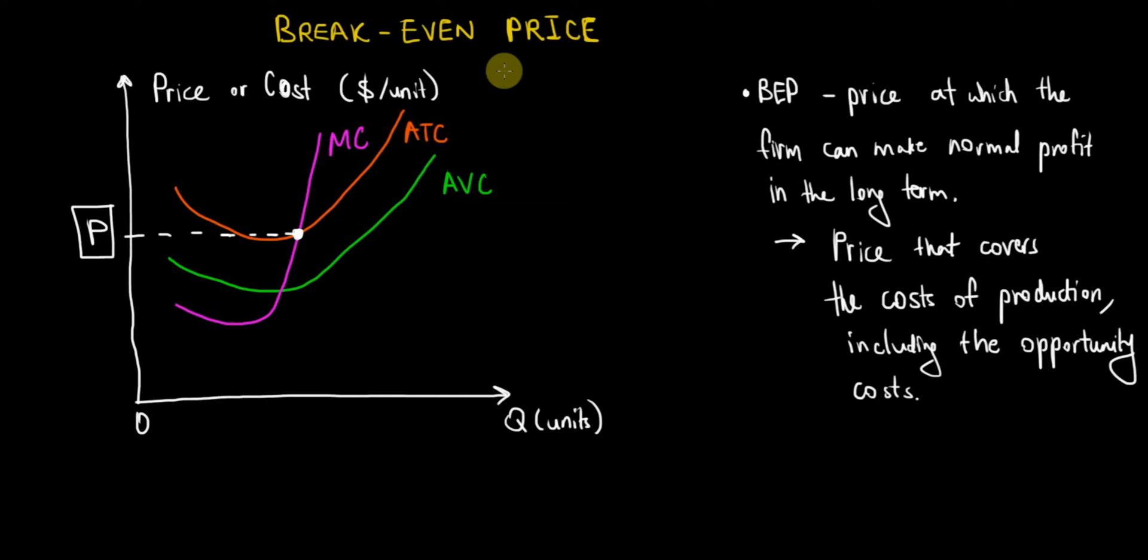However, remember what we talked about two videos ago - we are discussing economic profit, not just accounting profit. Therefore, we are considering the price that's going to make the company have a zero economic profit, which means a normal profit.